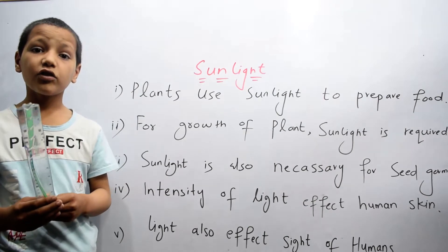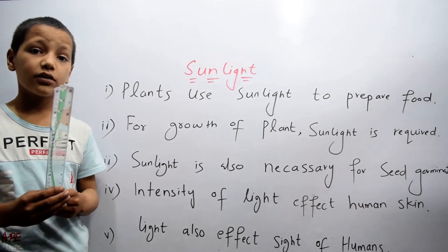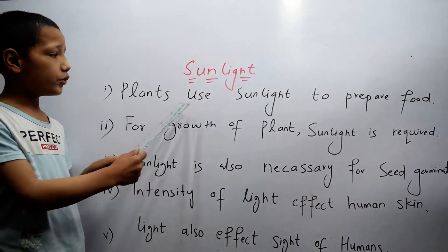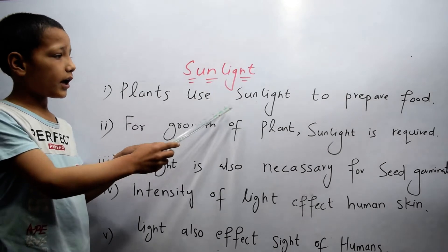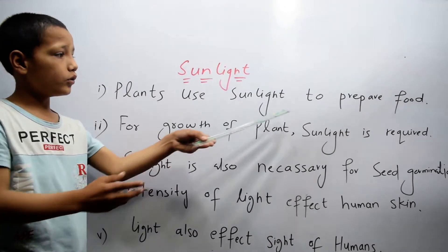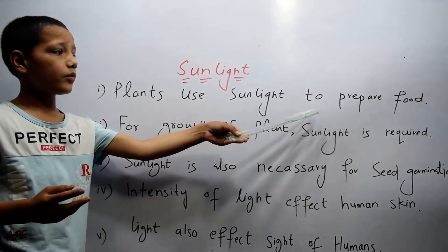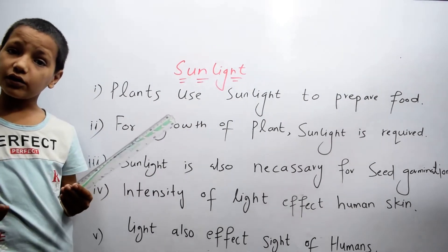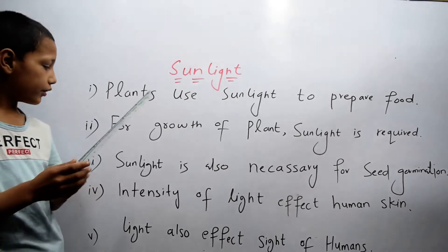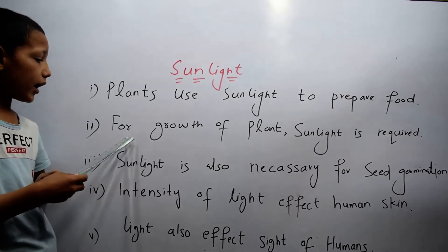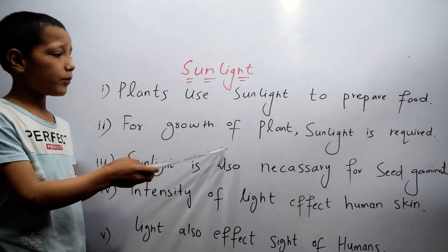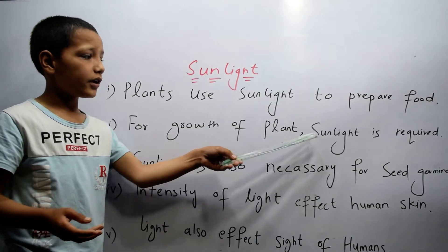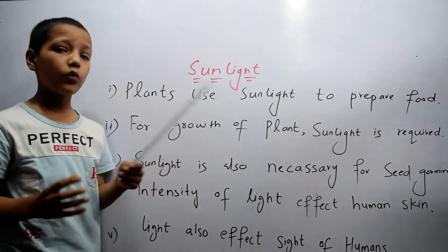The first importance is plants use sunlight to prepare food. The second importance is for growth of plants, sunlight is required.